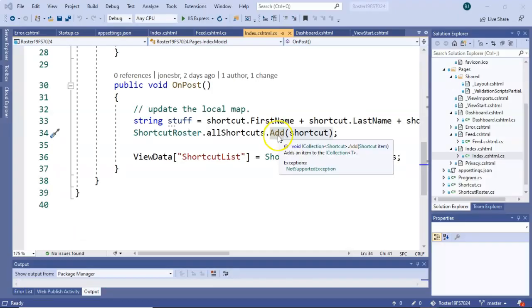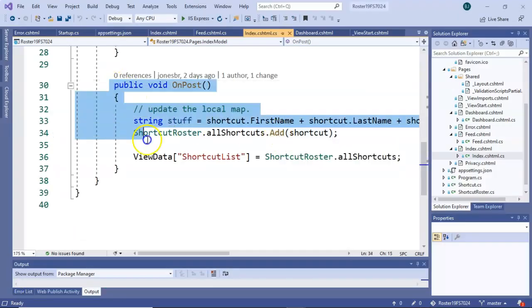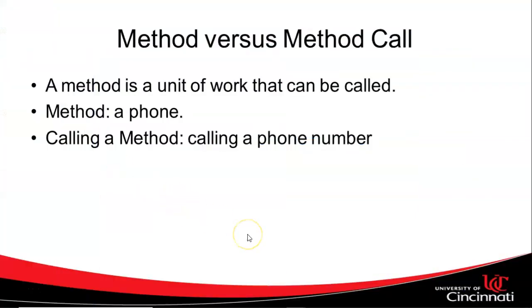Somewhere there's a method called add and we're calling it here. Right here there's a method called on post and someone else can call that. So hopefully I made that clear. If not, let me know if I can explain it a bit more.